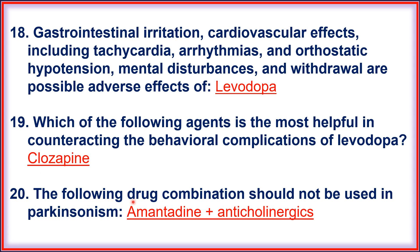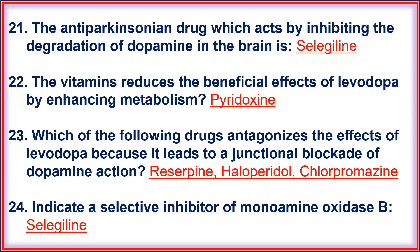Question twenty: the drug combination that should not be used in parkinsonism is amantadine combined with anticholinergics — these should not be co-administered to patients with Parkinson's disease. Question twenty-one: the anti-parkinsonian drug which acts by inhibiting the degradation of dopamine in the brain is selegiline.